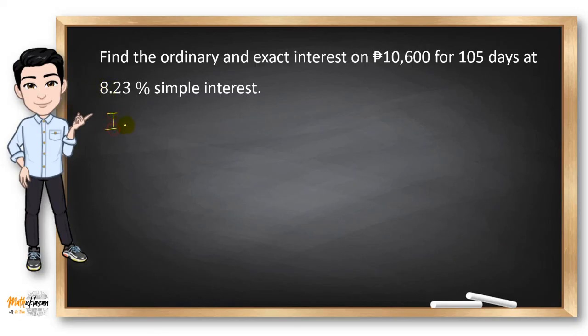Let's solve for the ordinary interest first. So we have P10,600 times the rate, which is 8.23%, times 105 over 360 days. So here, the answer is P254.44.